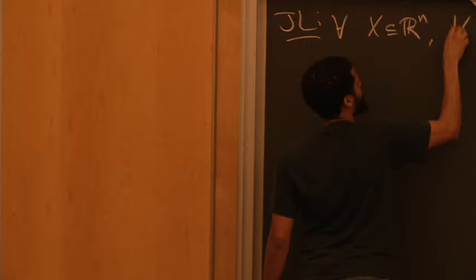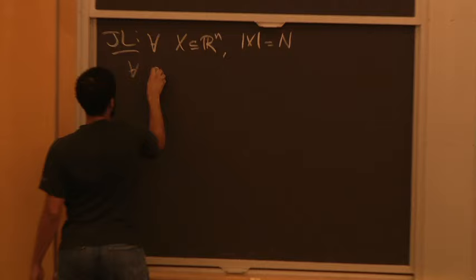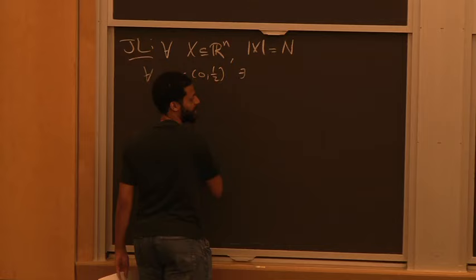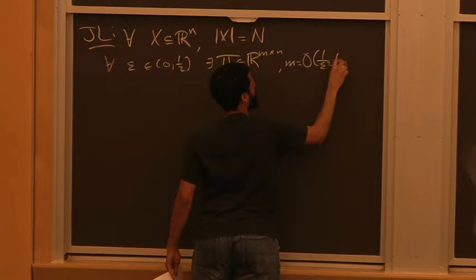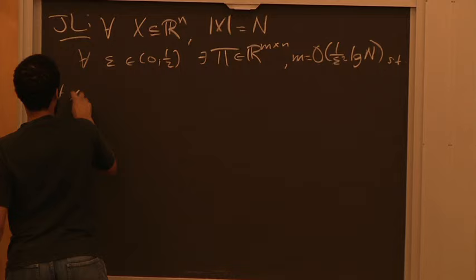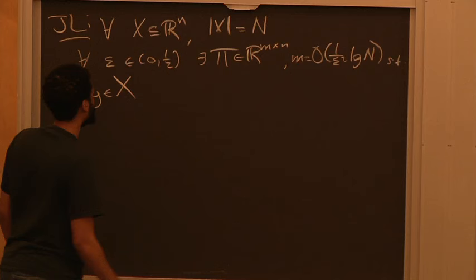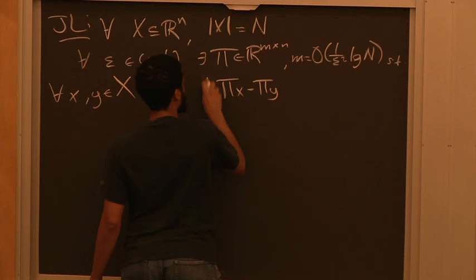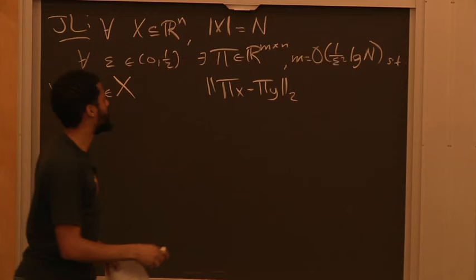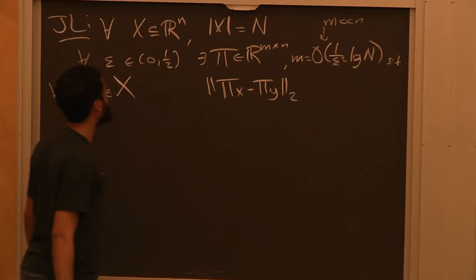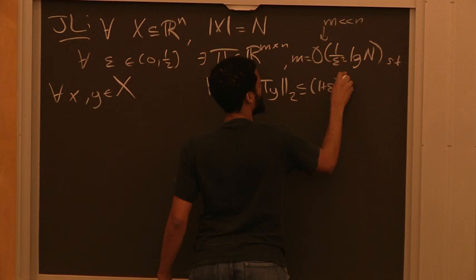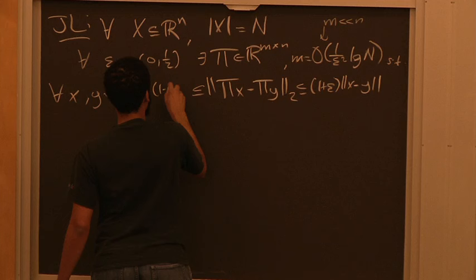Let X be a subset of R^n with |X| = N. For all ε between 0 and 1/2, there exists a linear map π which is m×n, where m = (1/ε²) log n, such that for all x, y in X, if you look at ‖πx − πy‖, it's at most (1+ε)‖x−y‖ and at least (1−ε)‖x−y‖. Here m is much less than n — we're trying to do dimensionality reduction.